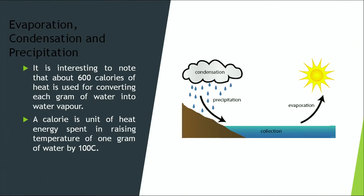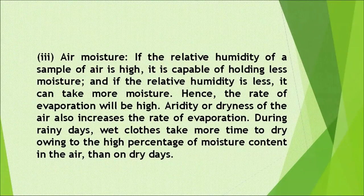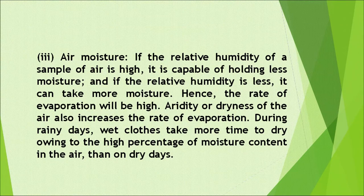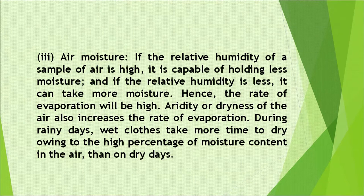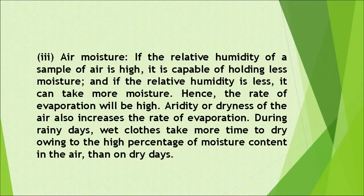Look at this picture showing the process of condensation, precipitation, and evaporation. Another factor affecting evaporation is air moisture. If the relative humidity of a sample of air is high, it is capable of holding less additional moisture, so the rate of evaporation will be low. If the relative humidity is less, air can take more moisture, and the rate of evaporation will be high. Aridity or dryness of the air also increases the rate of evaporation. During rainy days, wet clothes take more time to dry owing to the high percentage of moisture content in the air compared to dry days.